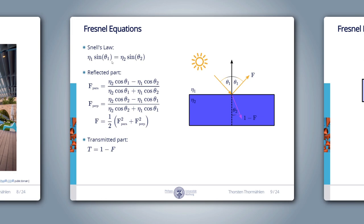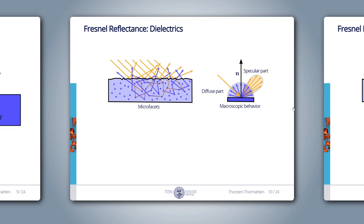Given eta1, eta2 and theta1, we can solve for theta2. With theta2, we can compute the fraction of light that is reflected using the Fresnel equation. The transmitted fraction is then 1 minus the reflected part. For dielectrics, light photons are either reflected, transmitted, or absorbed with angle-dependent relative frequency. The reflected part is scattered on the microfacets, creating the specular part macroscopically. In opaque materials, the transmitted part is randomly deflected below the surface, partially absorbed and emitted into random directions — this creates the diffuse part. The more light is reflected, the less is transmitted and the smaller the diffuse part becomes.